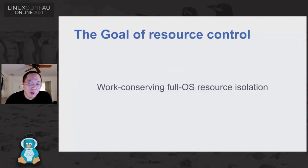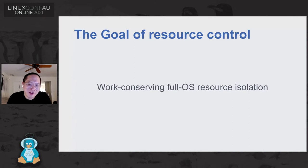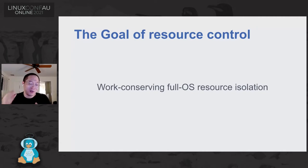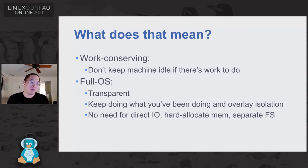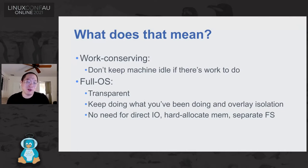So what is resource control? This is the phrase that captures the mission statement of our team: work conserving full OS resource isolation. The resource isolation part is relatively intuitive — you have multiple competing users of resources on the system and you want to distribute them in a controlled manner. Work conserving means that we don't want to waste resources — CPU, memory, and IO — just to be able to control them. We want to control them without losing the total amount of work the system can do.